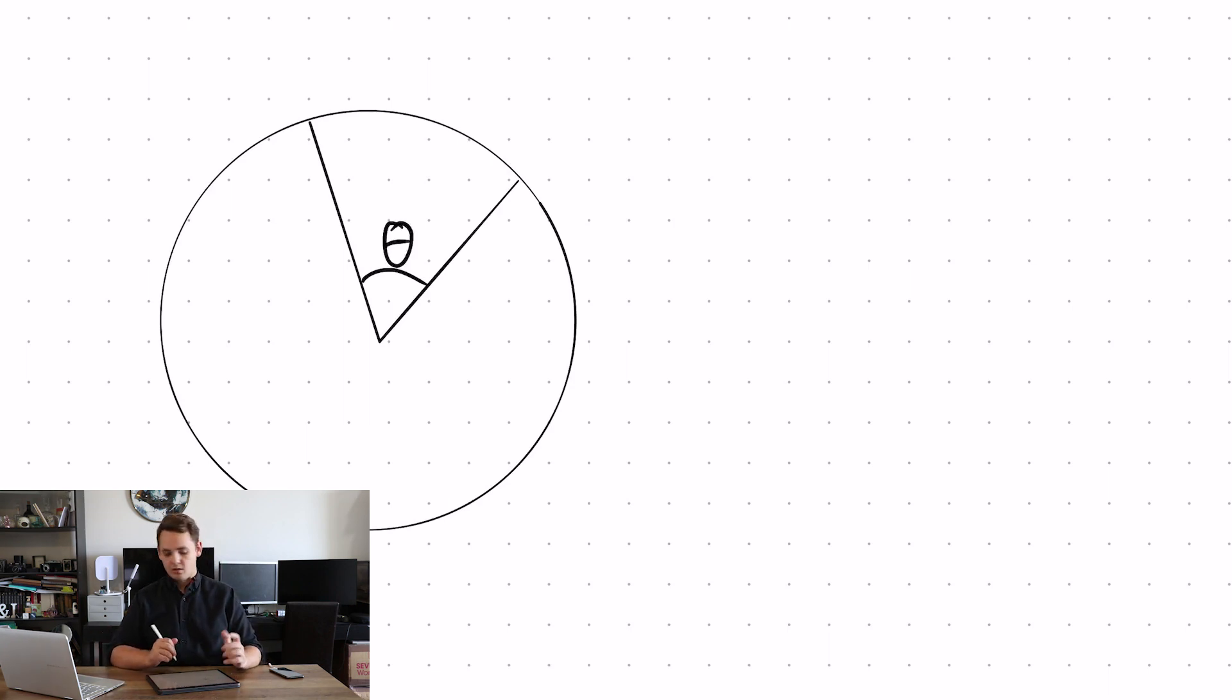So if you know the angle that is created by the arc, let's call it theta for now, then if I want to talk about the fraction of a circle I have, I will have theta over 360 of that circle.